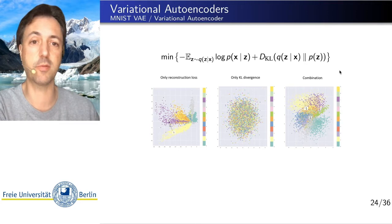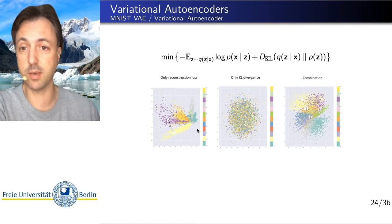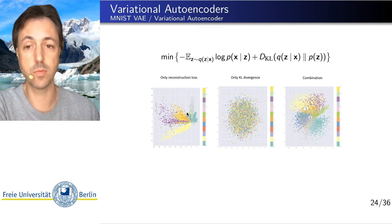So only using the reconstruction loss, that's a normal autoencoder, not a variational autoencoder. We kind of get clustering of different digits, but some of these clusters are widespread, some of these are more close. Some of them are almost overlapping, and what's worse is that we get some empty space here. So if we would now want to decode from this empty space, we haven't trained for that, and our decoder wouldn't decode anything to anything meaningful.